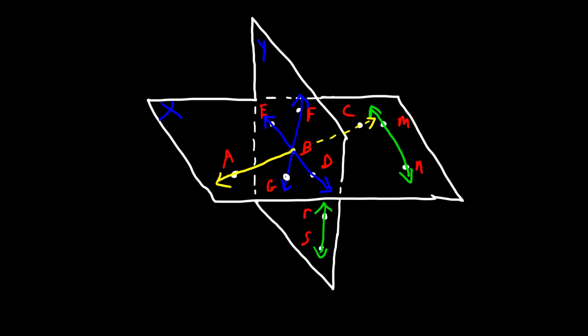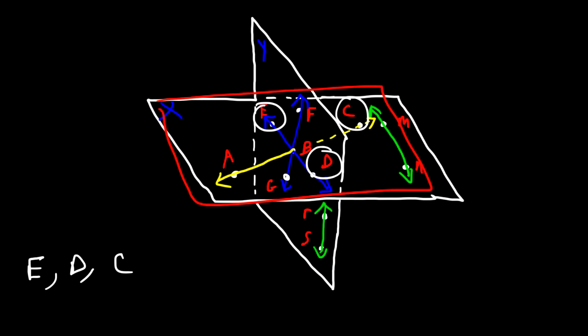Now for some verbal questions regarding two planes. Given points E, D, and C — determine which of the two planes, plane X or plane Y, they determine. Points D, E, and C are all located within plane X. So these three points determine plane X.